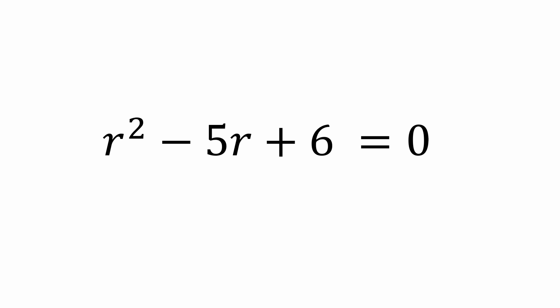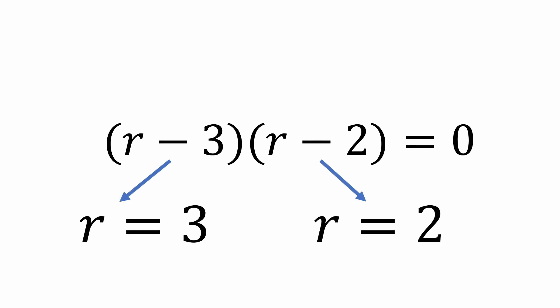This is easily factorable as r minus 3 times r minus 2, which means r equals 3 and 2.